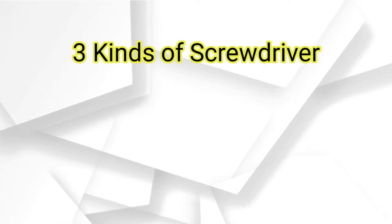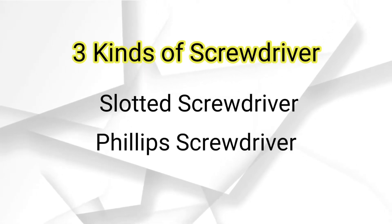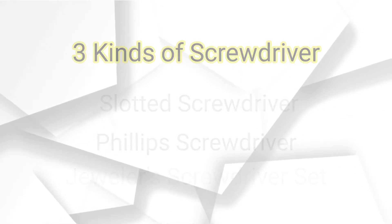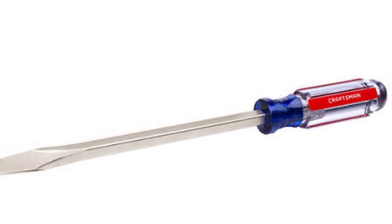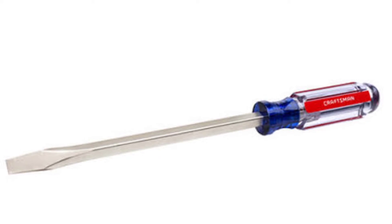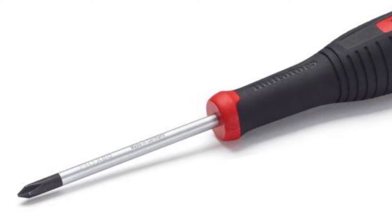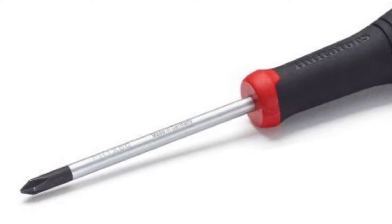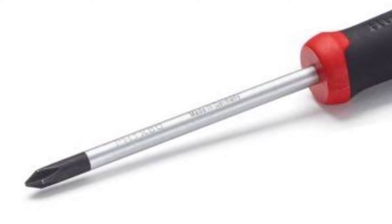We have three kinds of screwdriver. First, we have the slotted screwdriver, the Phillips screwdriver, and the jeweler's screwdriver set. The slotted screwdriver is used to drive and fasten negative slotted screws. It is a screwdriver that could take greater torque and could provide tighter fastening.